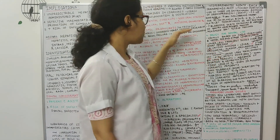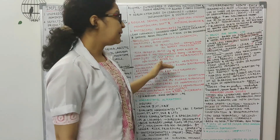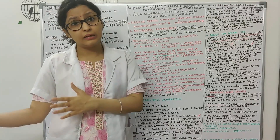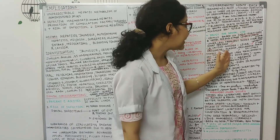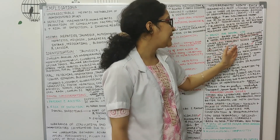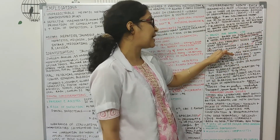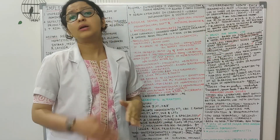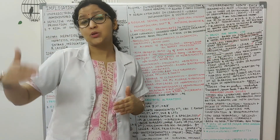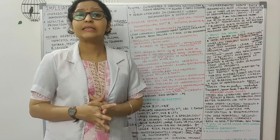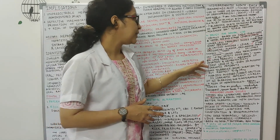Coming to local anesthetics — we've already discussed antibiotics. Local anesthetics have to be given with caution because amides get metabolized in the liver. Articaine is metabolized mainly in the plasma and prilocaine is partly metabolized in the lungs, so they are a little safer and cause less toxic side effects compared to normal local anesthetics used in dentistry.